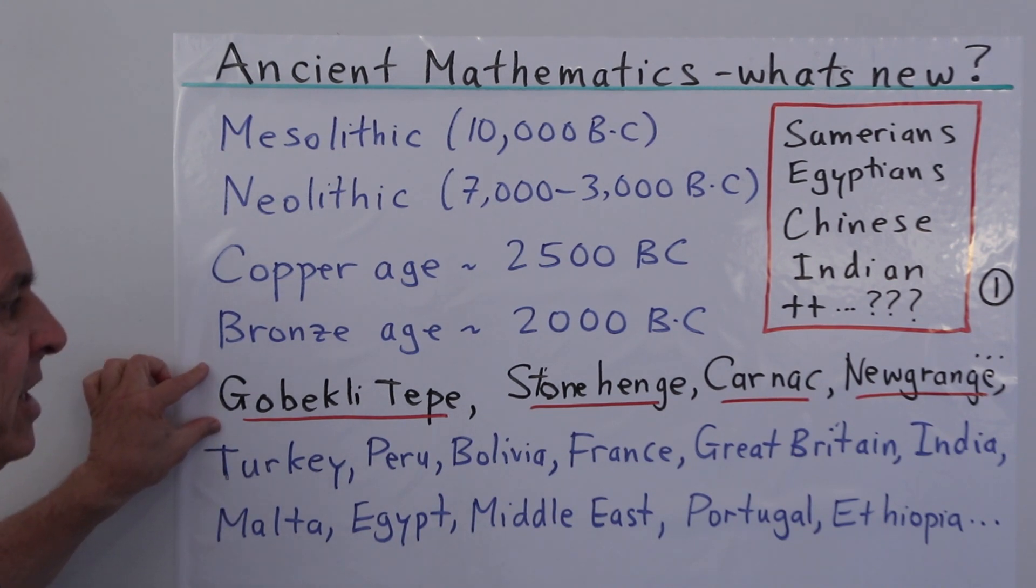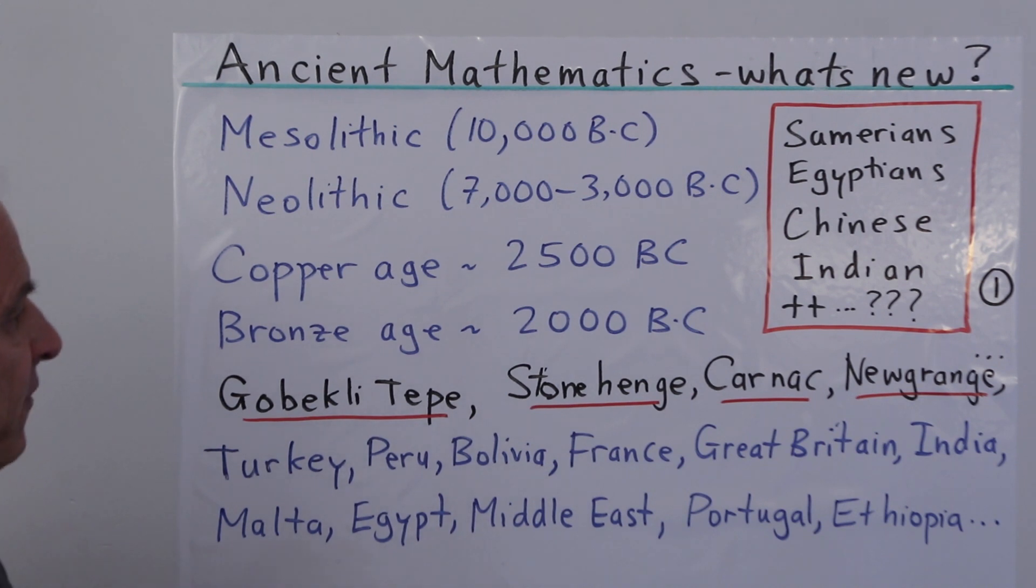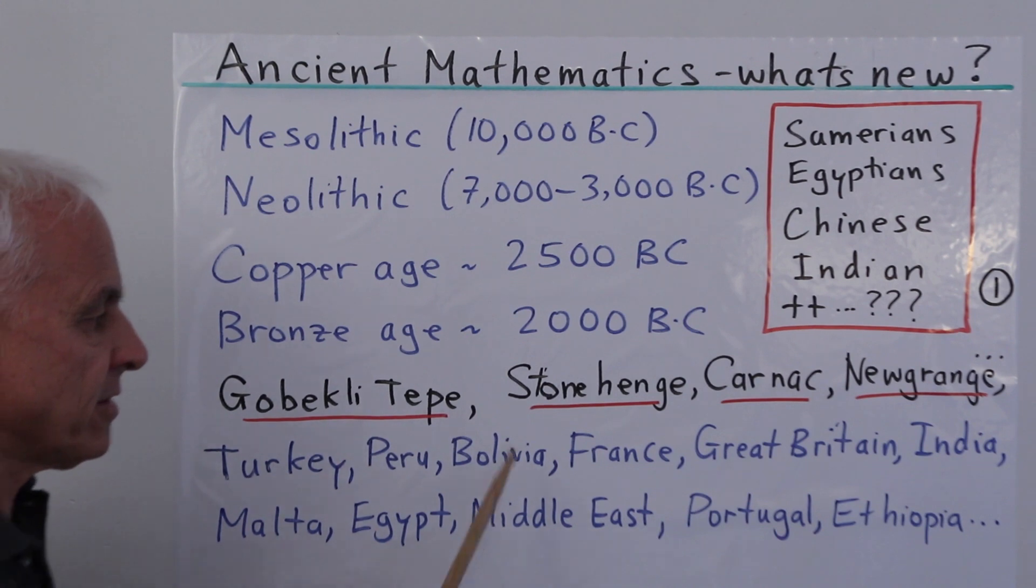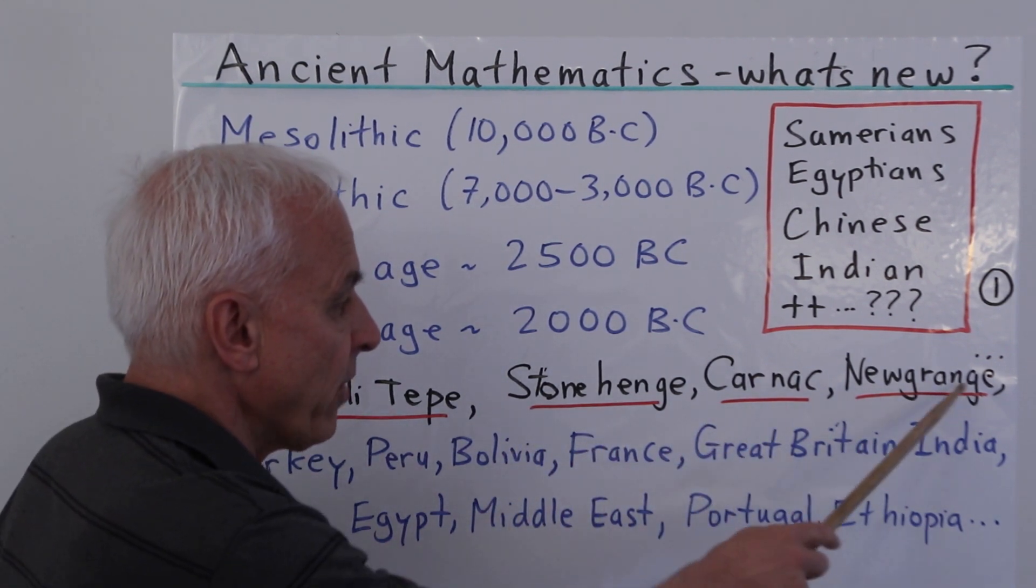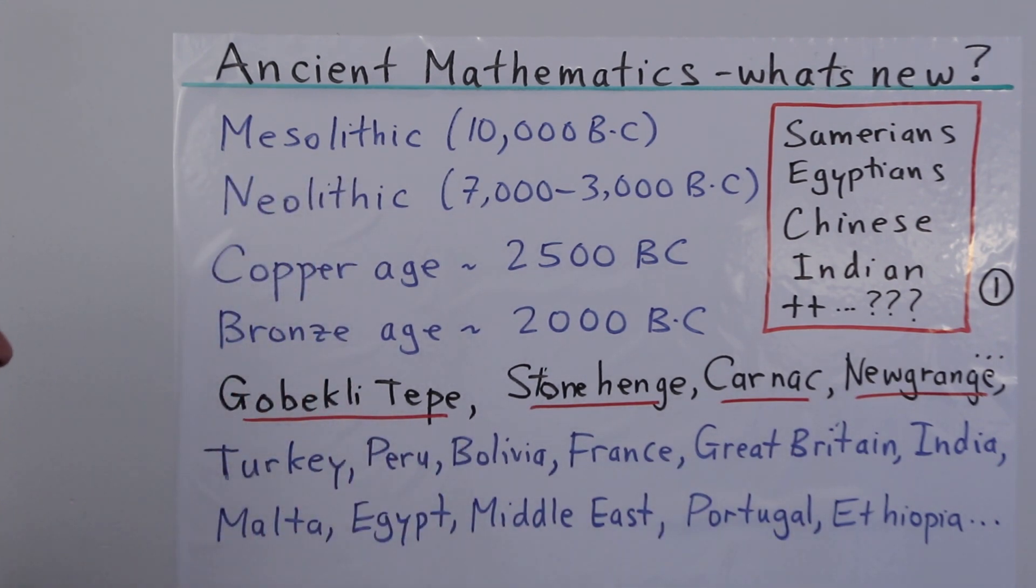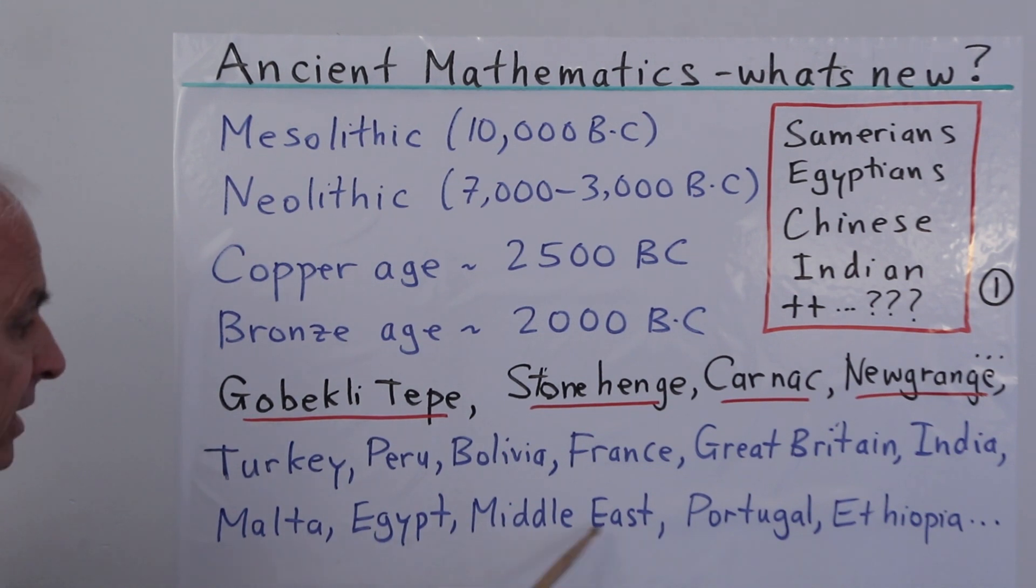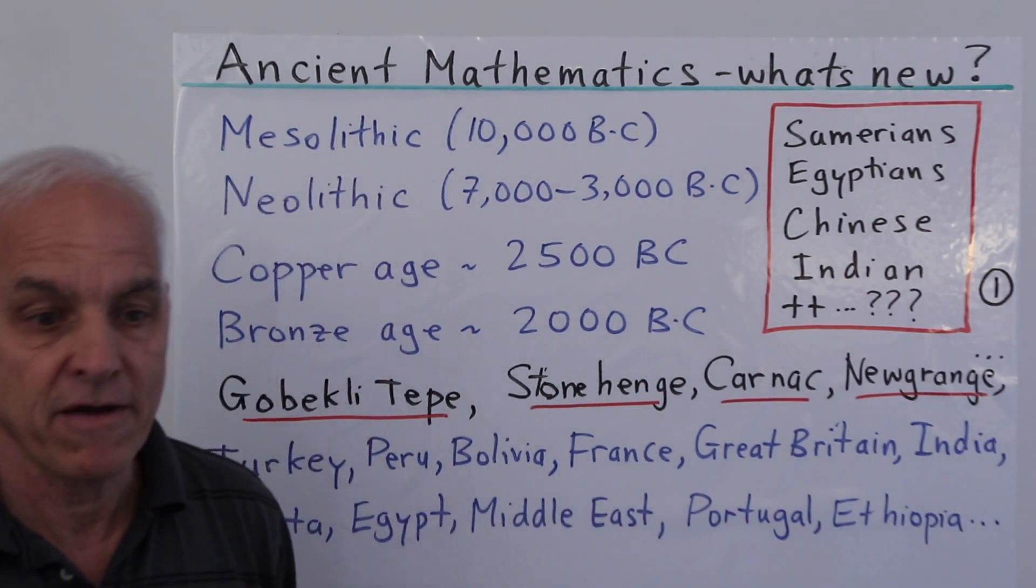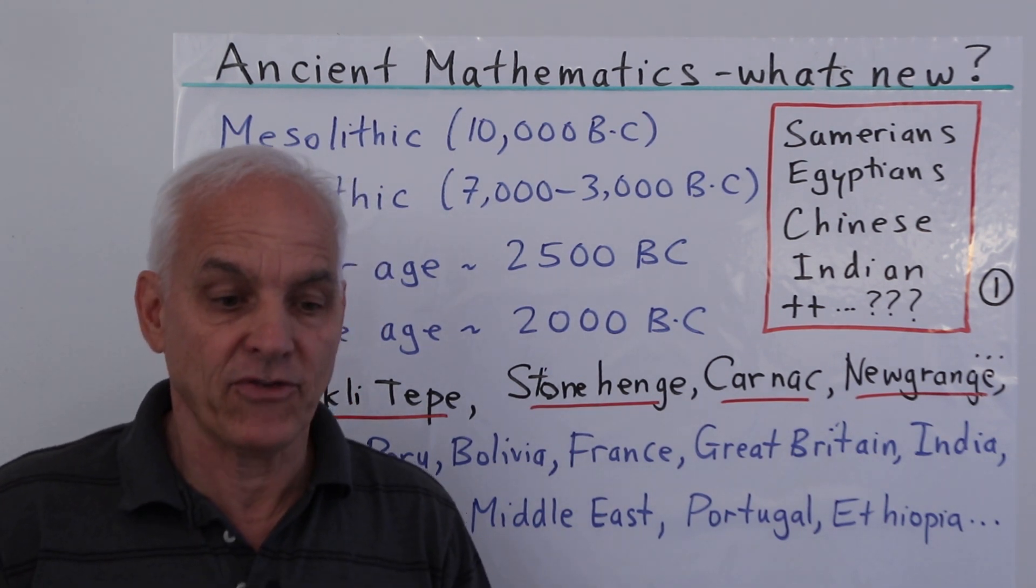But we do have lots of sites, a wide variety of really interesting sites from ancient times including Gobekli Tepe in Turkey, Stonehenge, lots of interesting places in England, Carnac in France, Newgrange in Ireland, and many others across the world - Turkey, Peru, Bolivia, France, Great Britain, India, Malta, Egypt, Middle East, Portugal, Ethiopia. There's a long list of fabulous, interesting megalithic sites where there's something going on.